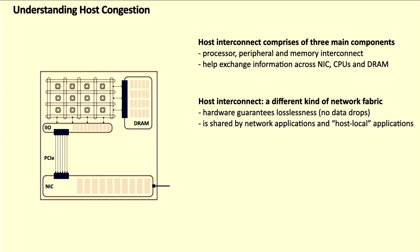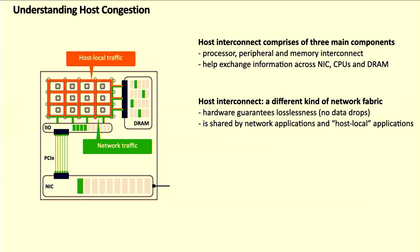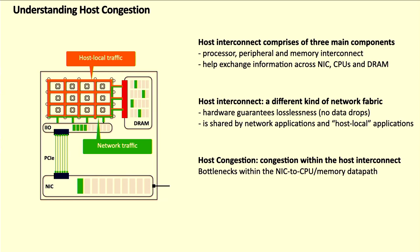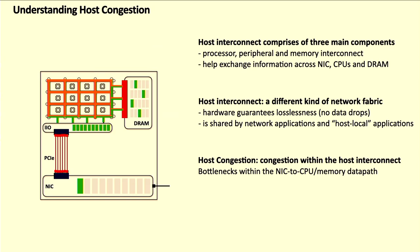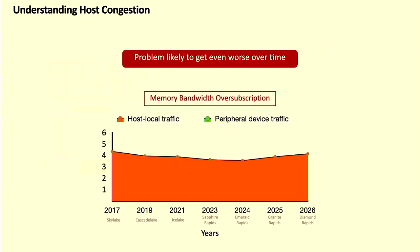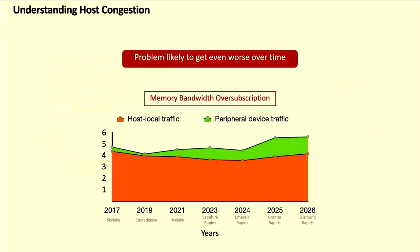The host interconnect has two interesting properties. First, it guarantees losslessness using hop-by-hop credit-based mechanisms — each of the processor, peripheral, and memory interconnects uses this mechanism, and host congestion happens because of poor interaction between these individual flow control mechanisms. Second, the host interconnect is shared by network applications and host local applications. Importantly, network applications use congestion control, but host local applications do not. Host congestion happens when traffic from host local and network applications contends for resources like memory interconnect bandwidth, leading to back pressure all the way back to the NIC, causing queue buildup and eventually packet drops at the NIC. This problem is likely to get worse over time, as peripheral traffic from NICs and PCI-attached accelerators has been increasing at a much faster rate.